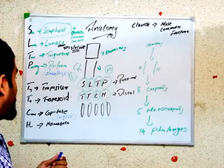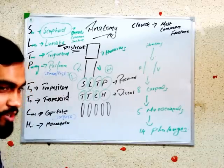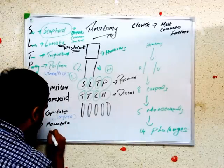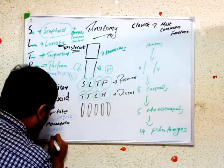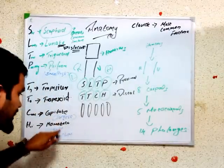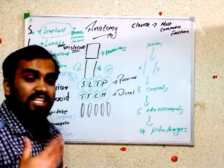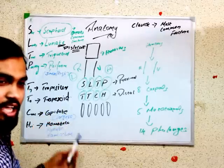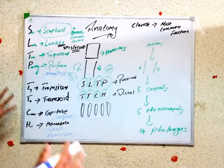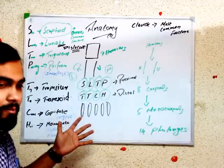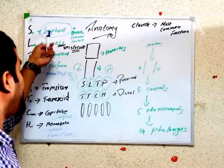Remember: pisiform is the smallest carpal bone — it is on the ulnar side, near the little finger. The largest carpal bone is the capitate. To remember capitate is the largest, think of a capital city — London is the capital of England, a big city. So capital = largest. Capitate is the largest carpal bone.